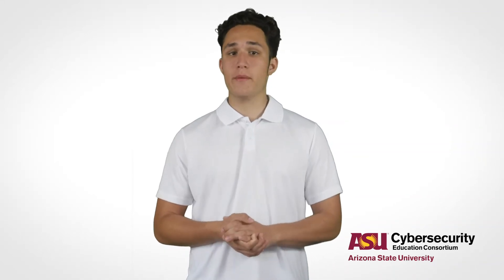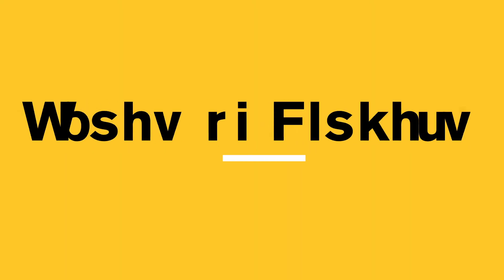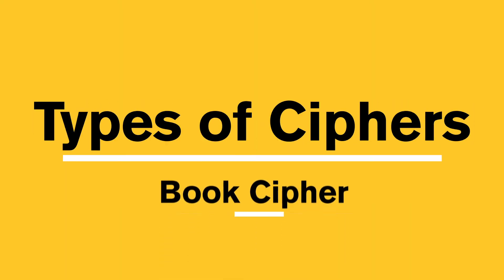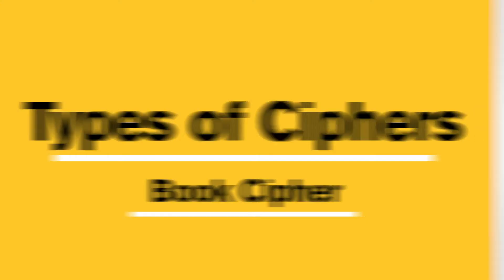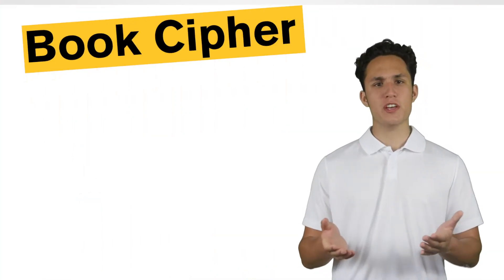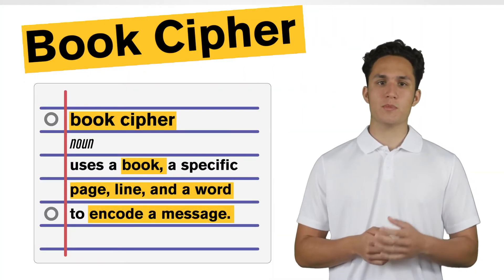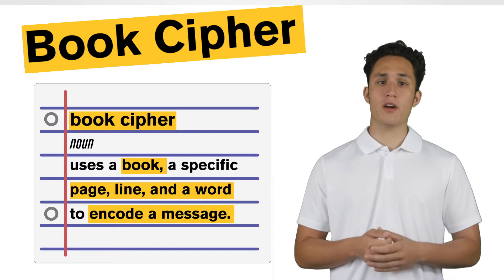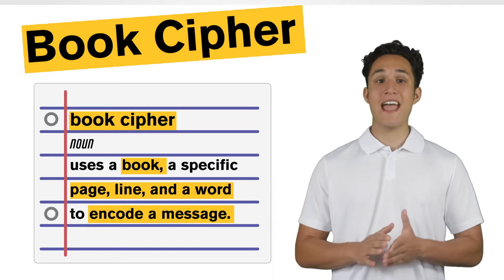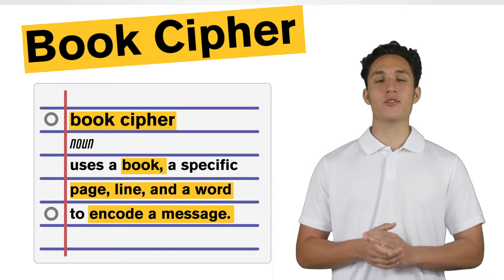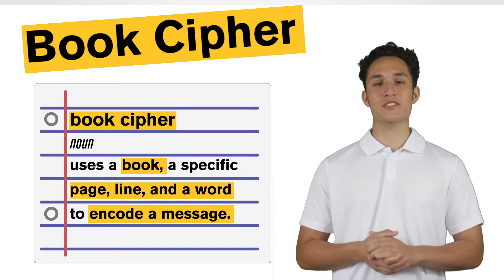Welcome. Today we're learning about book ciphers. A book cipher uses a specific page number, line number, and a word in order to encode a message.